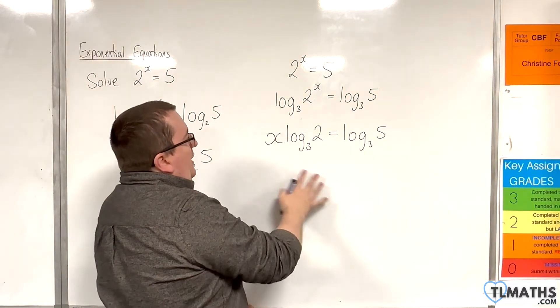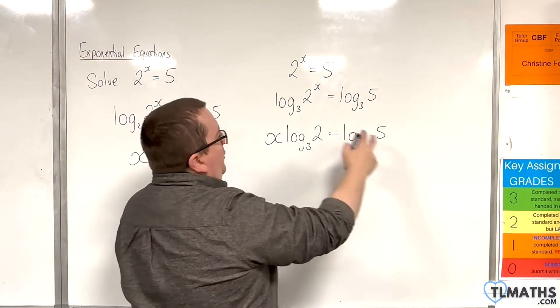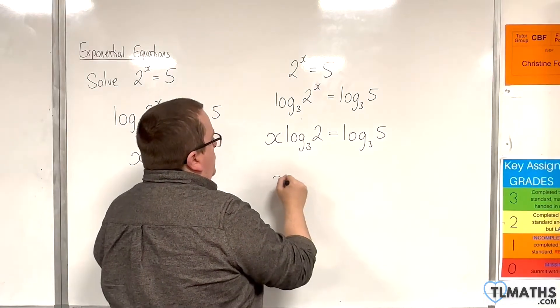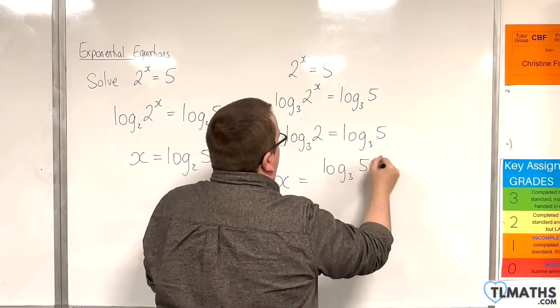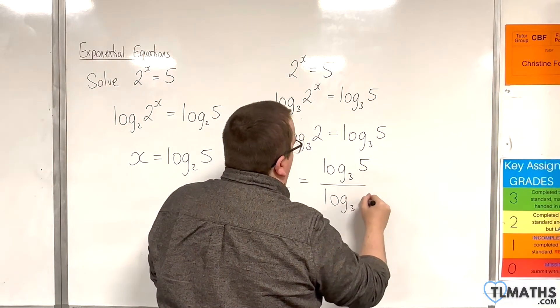And then, to get x equals, I just need to divide both sides by the log base 3 of 2. So, x is log base 3 of 5 divided by log base 3 of 2.